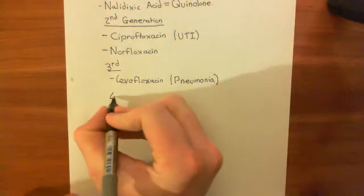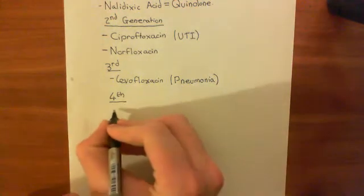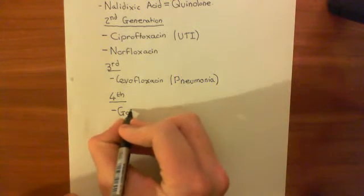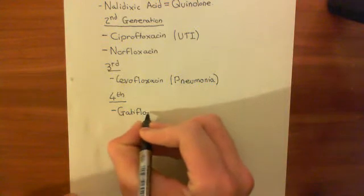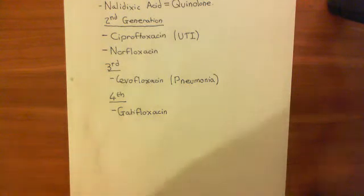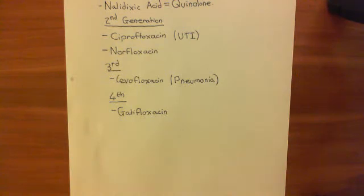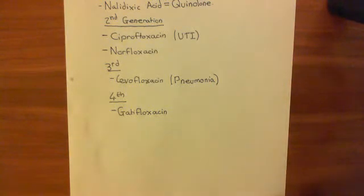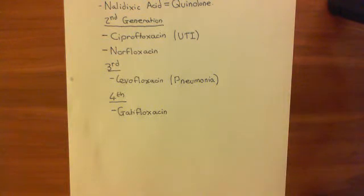The fourth generation fluoroquinolone example is gatifloxacin. As you go up the generations, they become progressively better at targeting gram-positive bacteria, so gatifloxacin is again effective against community-acquired pneumonia caused by Streptococcus pneumoniae. In summary, fluoroquinolones are used to treat urinary tract infections, community-acquired pneumonia, and bacterial gastroenteritis — infections of the gastrointestinal tract — and they are very, very potent.